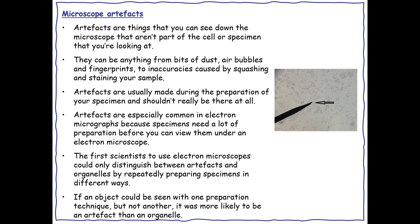Microscope artefacts are things you can see down the microscope that aren't actually part of the cell or specimen you're looking at. They can be anything from bits of dust, air bubbles and fingerprints, to inaccuracies caused by squashing and staining your sample. Artefacts are usually produced during preparation of the specimen and shouldn't really be there at all. They are especially common in electron micrographs because specimens need a lot of preparation. The first scientists to use electron microscopes could only distinguish between artefacts and organelles by repeatedly preparing specimens in different ways - if an object could be seen with one preparation technique but not another, it's more likely to be an artefact rather than an organelle.